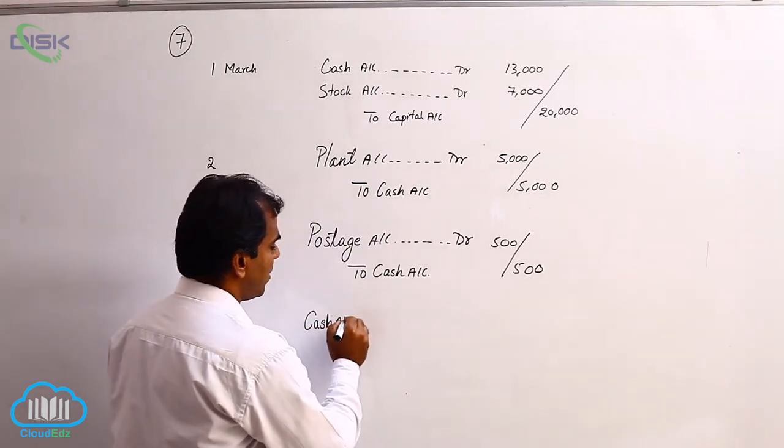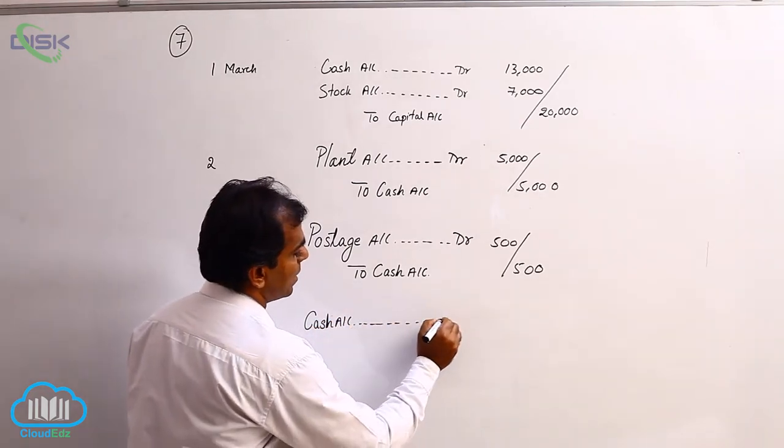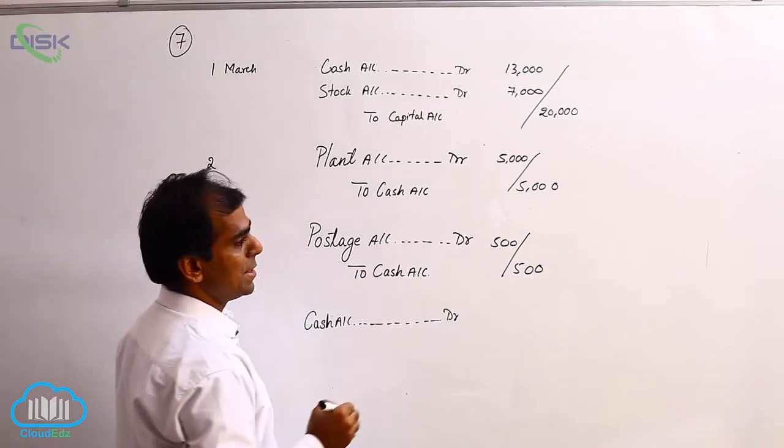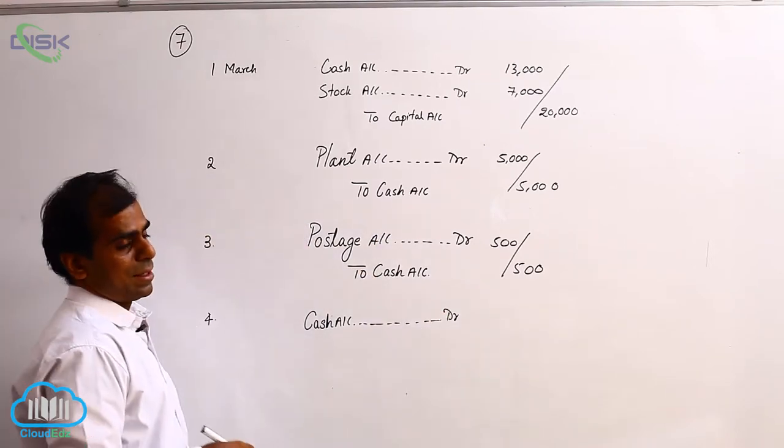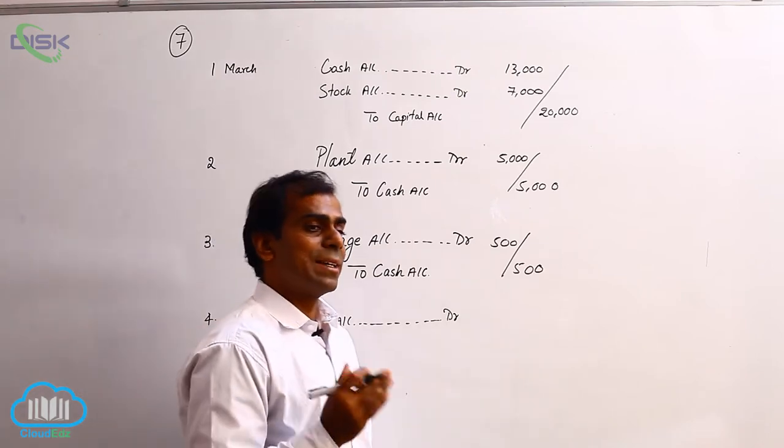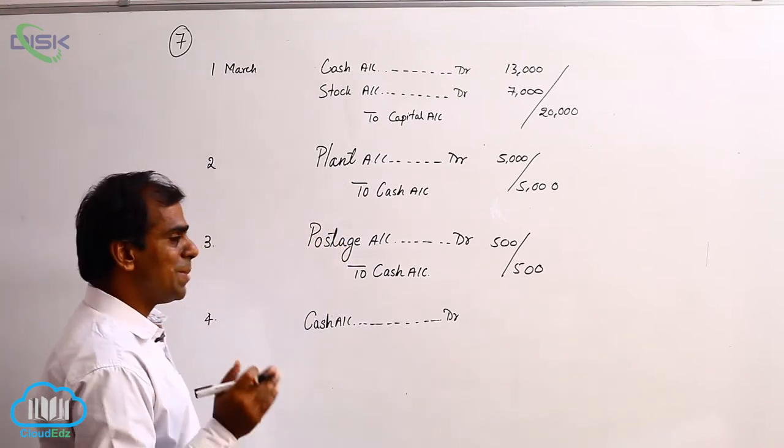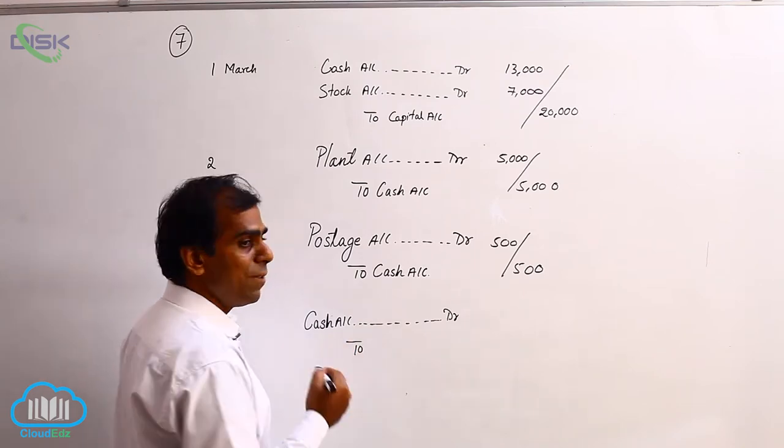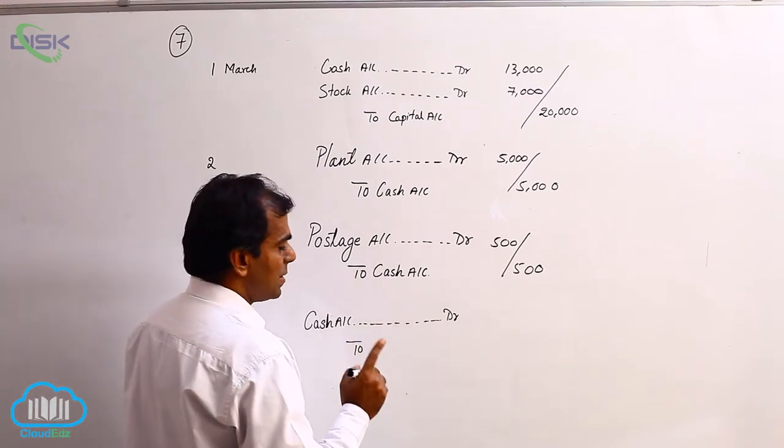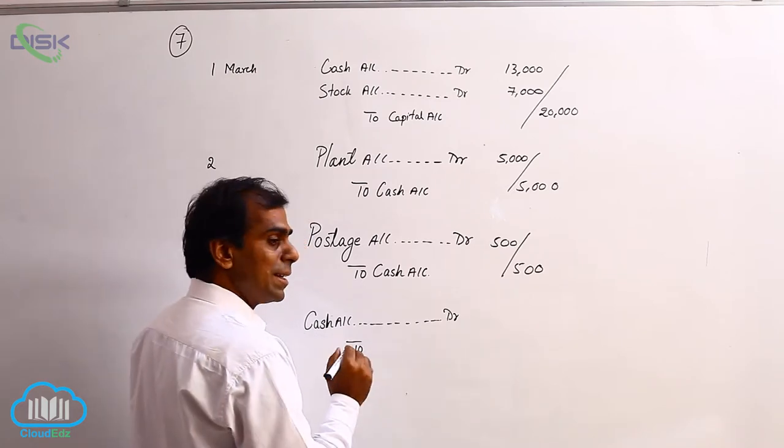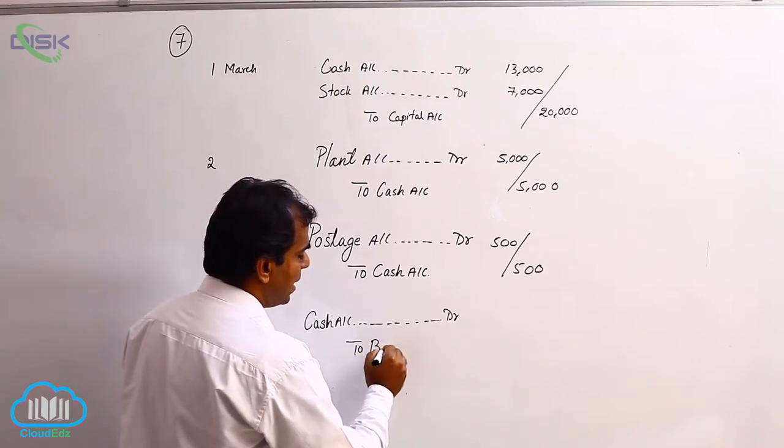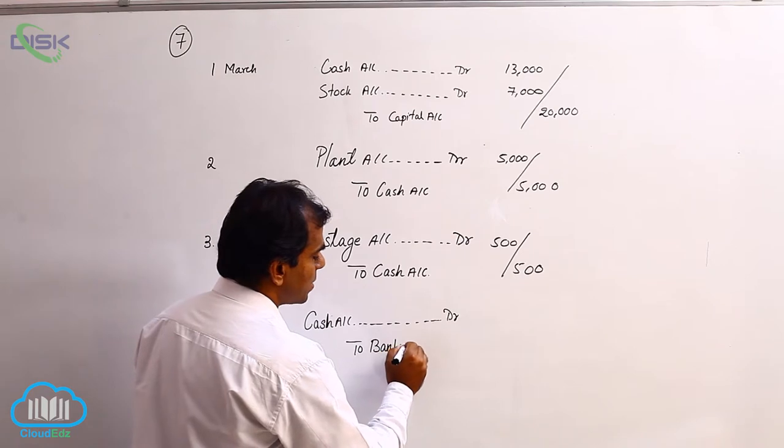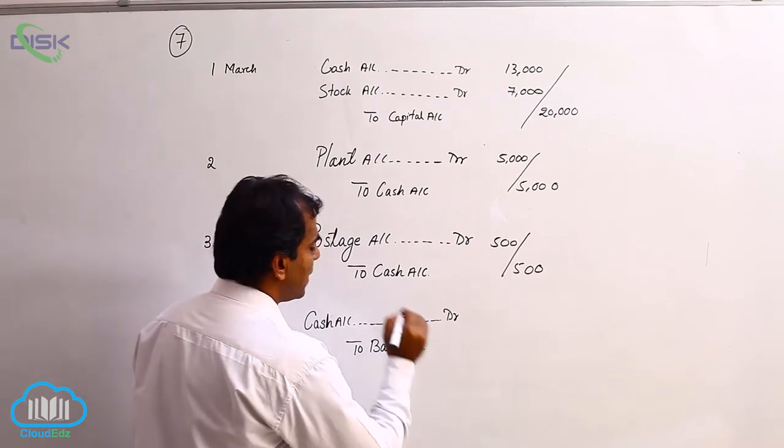So cash account debit, because from bank the money cash is coming into the business. And next, what is bank? Bank is a personal account. So what is bank doing when you are taking out money from the bank? Bank is the giver of the money. So what is the rule of personal account? Credit the giver. So we are crediting the bank here based on the rule credit the giver, bank being personal account.